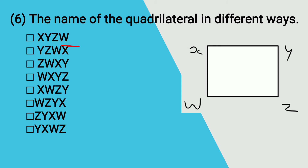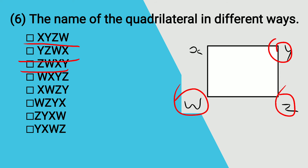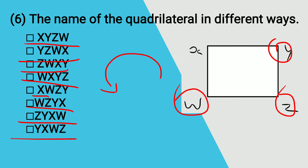The first name is quadrilateral XYZW. Starting from Y going clockwise: YZWX. Starting from Z: ZWXY. Starting from W: WXYZ. These are the clockwise names. Going anti-clockwise starting from X: XWZY. Starting from W: WZYX. Starting from Z: ZYXW. Starting from Y: YXWZ. These are the eight ways to name quadrilateral XYZW.